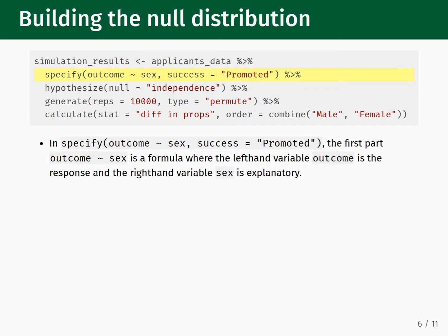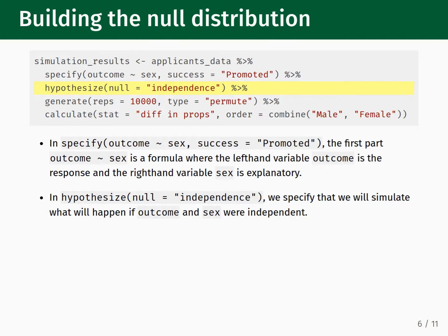This is why, in the playing card demo, we only needed to count promotions of men and women. Next, we pipe into the hypothesize function, which in this example has one input. null equals independence means that we will generate the null distribution by assuming that the outcome and sex columns are independent of one another. Generally, if both your response and explanatory variables in the specify function reference column names in your dataset, you can expect to use null equals independence.